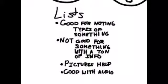Let's start with lists. Lists are very good for noting different types of something because then you can have the different titles and then the text with bullet points underneath. It's not very good with something where you have a ton of info. It's very good combined with different other formats to go more in depth about something.